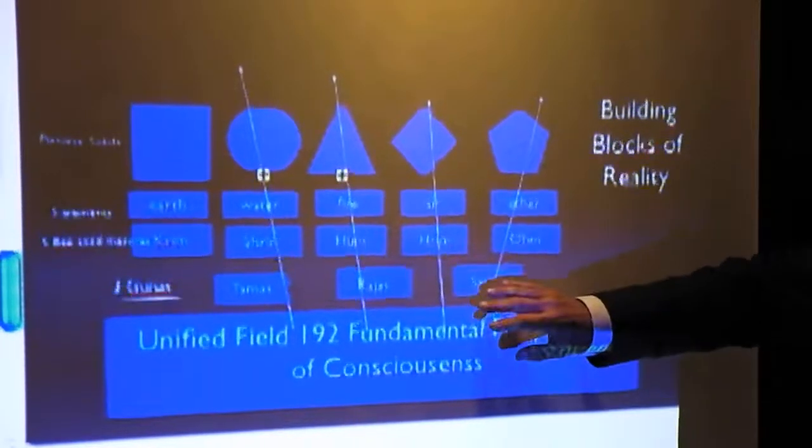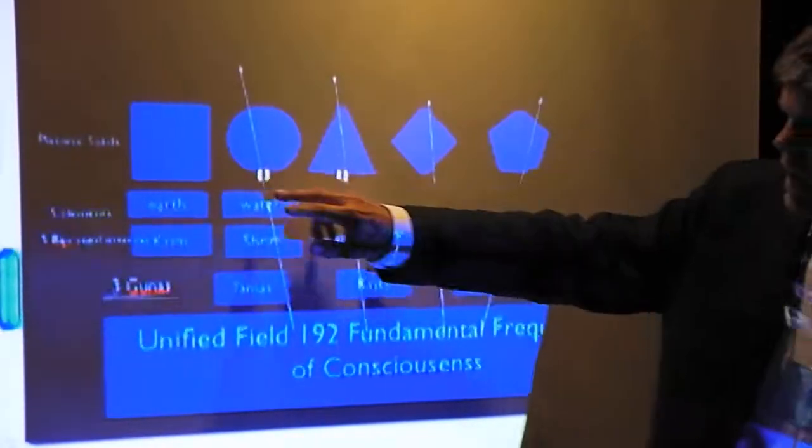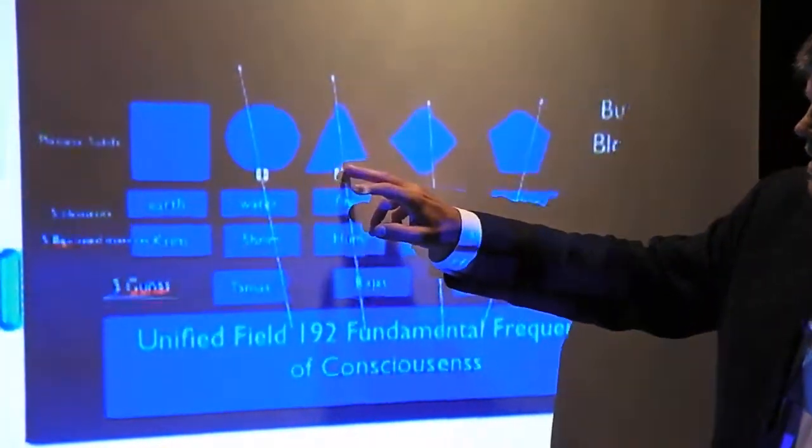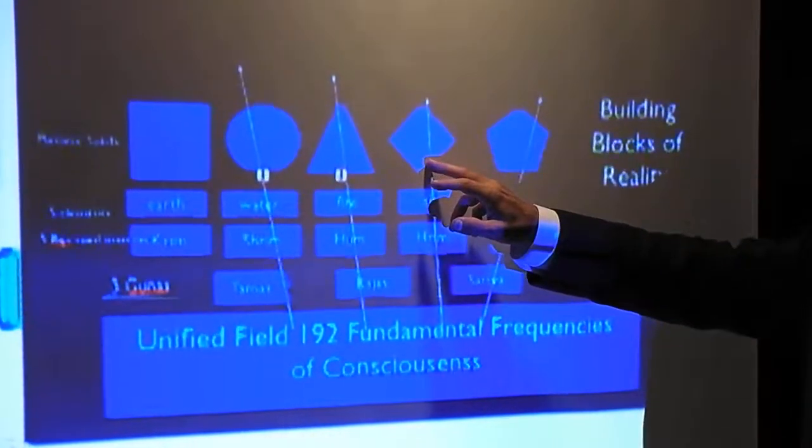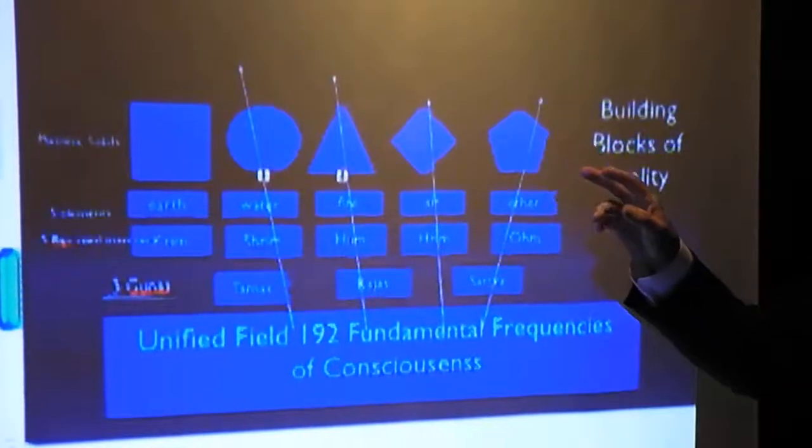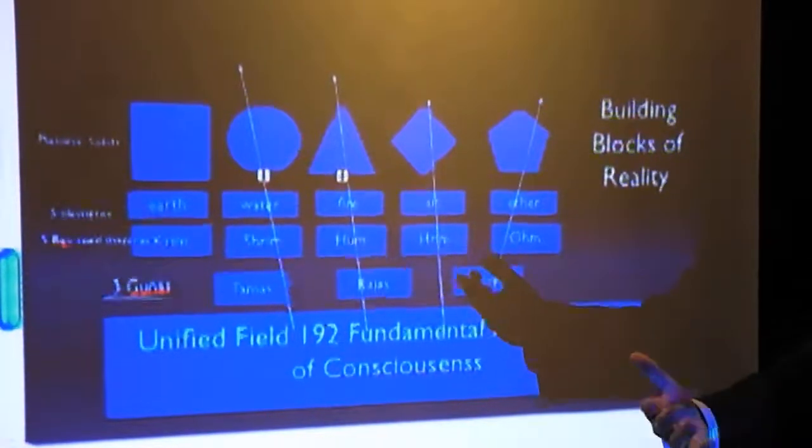And then what happens, these create the different elements—the cube, the icosahedron, the tetrahedron, the octahedron, and the dodecahedron—which are the five platonic solids, which are the basic building blocks of physical reality.